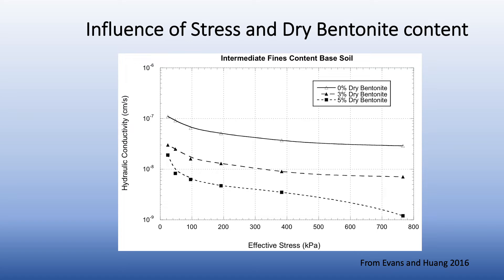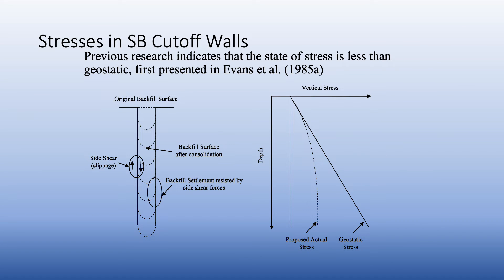To understand what hydraulic conductivity we might expect in the field, we need to know the stress in the trench. It was long recognized that when a soft, compressible material is placed into a rigid trench, it will settle and consolidate. Friction along the sidewalls means stresses within the backfill are less than those calculated using the geostatic state of stress. This phenomenon is called arching — the same model Terzaghi used to predict forces on a buried pipe.